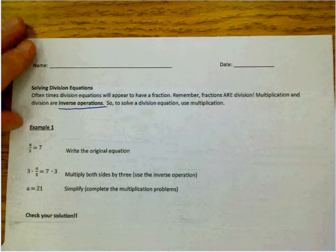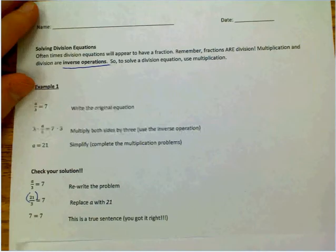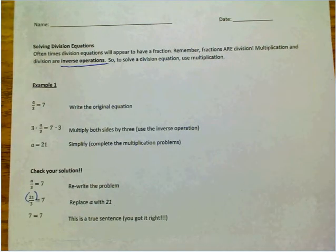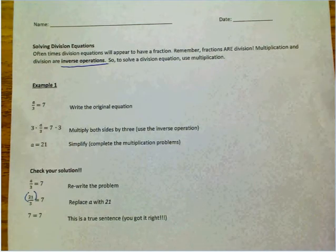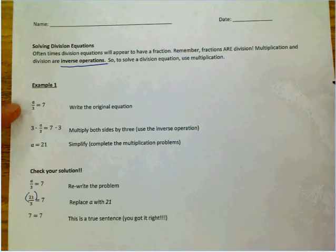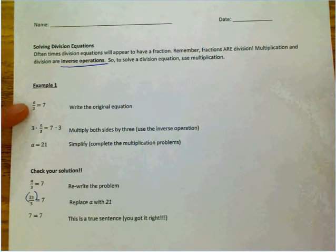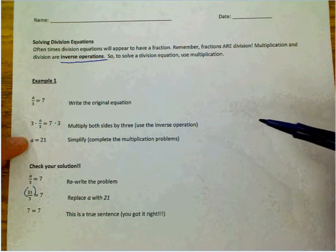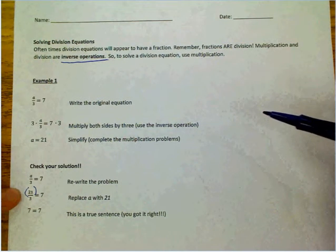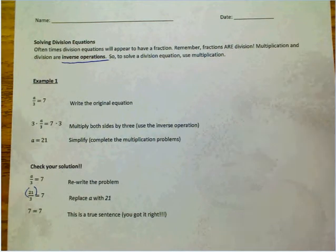Now, solving division operations, equations. The same thing that we have, but because we're dividing, the inverse operation is multiplication. So, we would then multiply by the denominator on both sides. So, we have a over 3 equals 7. We multiply by 3 to both sides, and we get a equals 21. Now, we need to check our solution, so we put 21 back in for a. We simplify, and we got it from there.